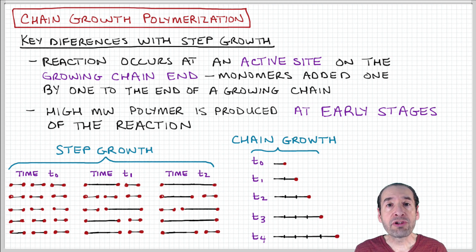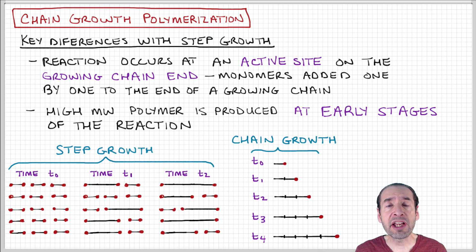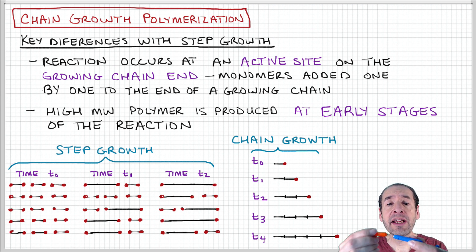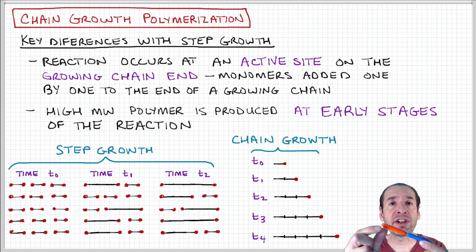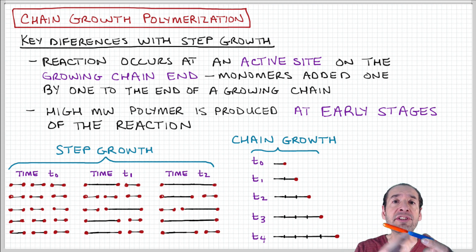Chain growth polymerization is different because the reaction takes place at an active site that's formed at the end of a monomer unit. So subsequent monomers are added at that active site. An active site is formed and another monomer unit is added, and that active site is then transferred to the new end of the polymer chain.